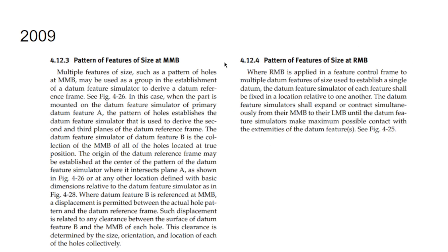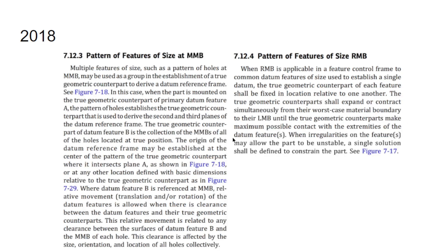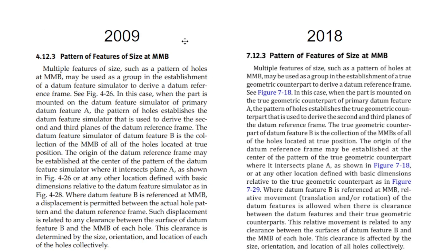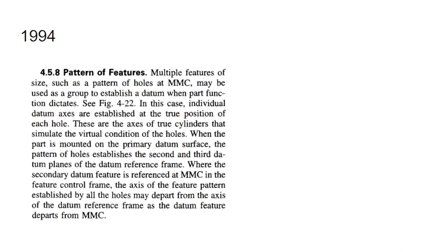They did end up adding a second paragraph to the standard talking about pattern of features of size at RMB, and it had some strange implications or maybe an omission that wasn't considered that they fixed later with additional sentences in the 2018 standard.